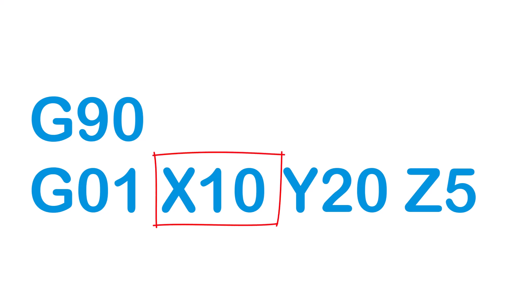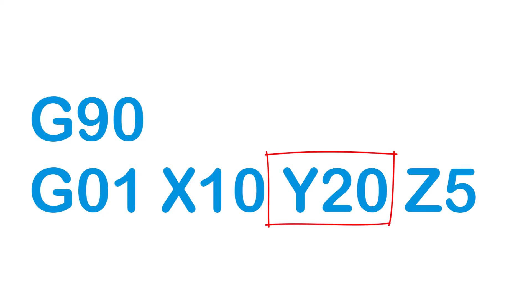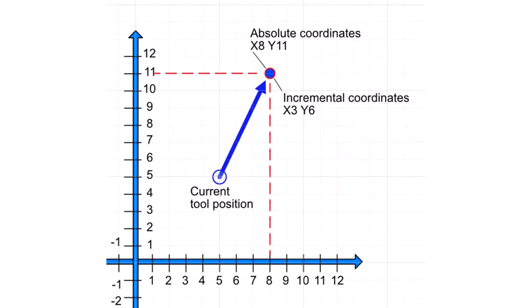In this example, if we're in G90 mode and the machine reads this line of G-code, it will move the tool to the position of 10 units along the X-axis, 20 units along the Y-axis, and 5 units along the Z-axis, all relative to the zero point. The counterpart to G90 is G91, which stands for incremental or relative positioning.